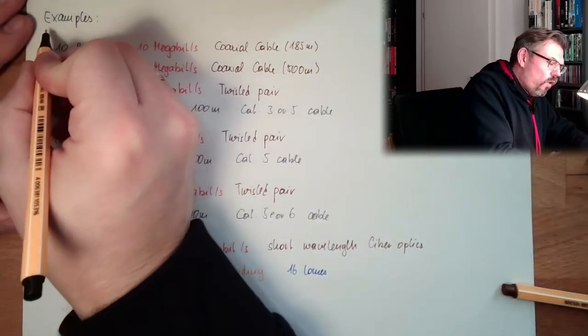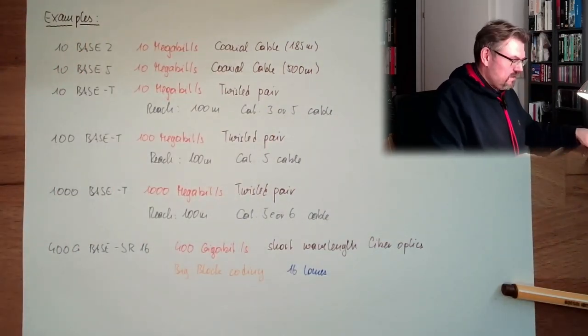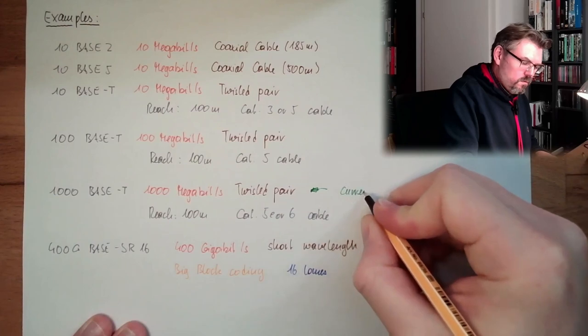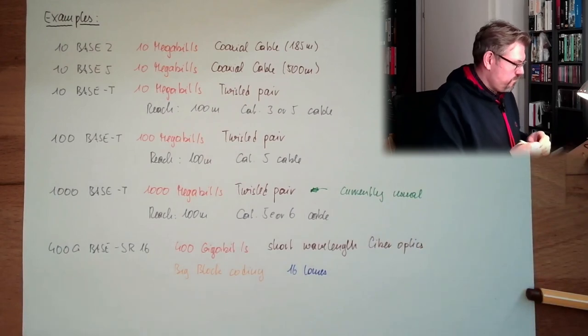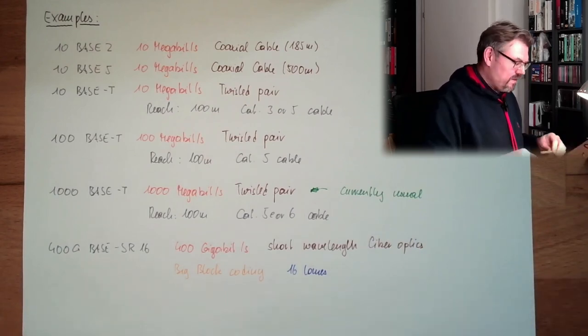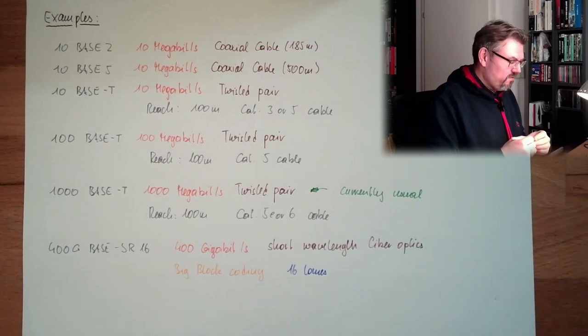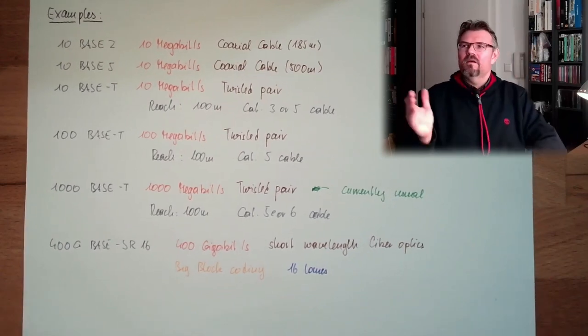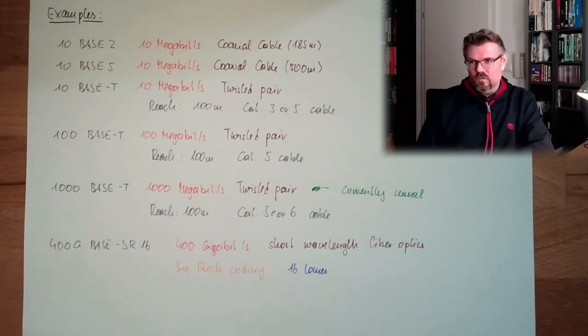So you see, there is not only one physical Ethernet layer, but actually, I will mark this, this is the usual, currently usual. Just that you understand what this means, 1000 megabit per second. Usually the transfer rates of our hard drives are lower. So streaming and so on, full HD, 4K, everything is possible with this gigabit Ethernet. Should be sufficient. This is why it's currently usual.